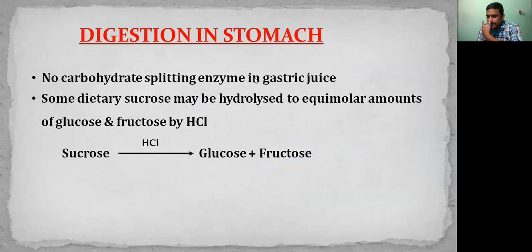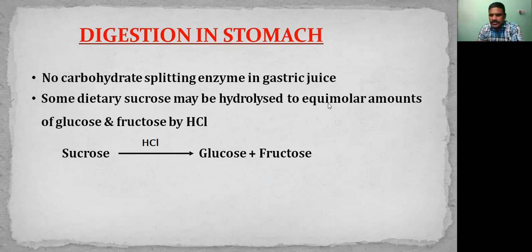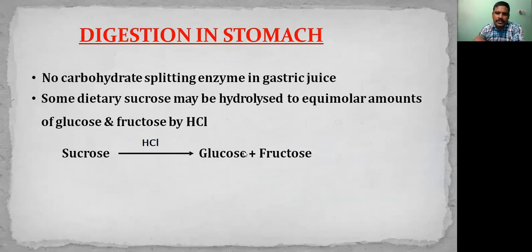In the stomach, no carbohydrates are digested, because gastric juice does not contain any carbohydrate-splitting enzyme or glycosidase. However, some dietary sucrose may be hydrolyzed to equimolar amounts of glucose and fructose by HCl. Even though HCl is not an enzyme, it can break sucrose into glucose and fructose, but only a small, limited amount of sucrose undergoes this conversion.